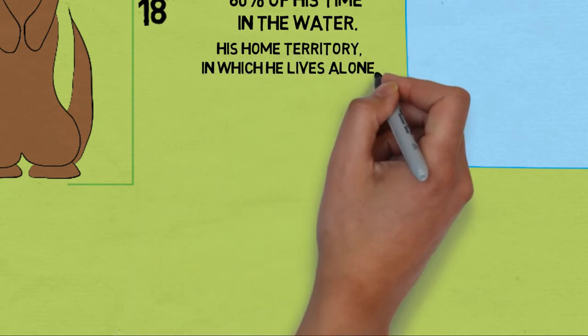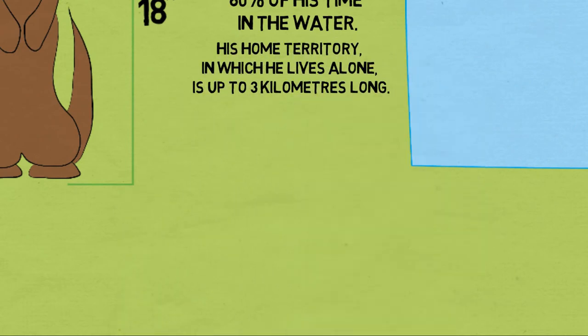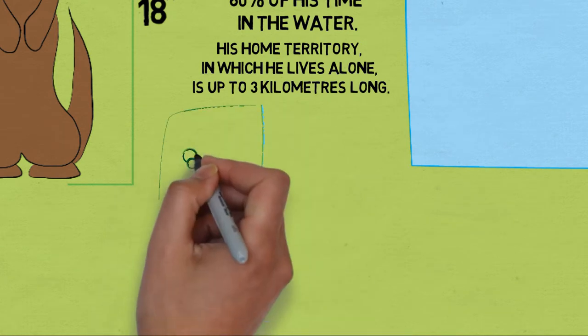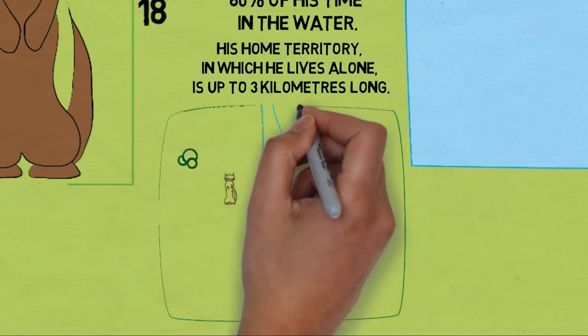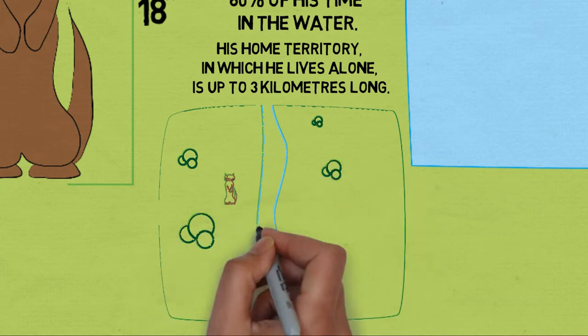Solitary animals, mink live in large habitats up to 3 km long. They do not permit other mink into this territory, except for the purpose of mating.